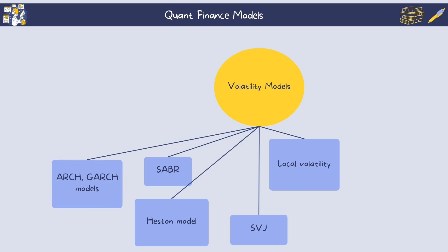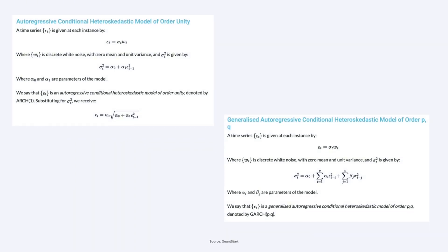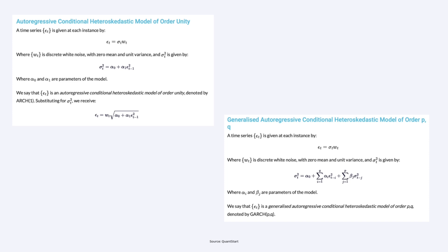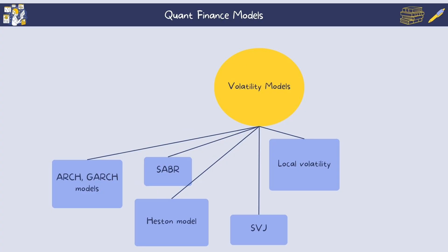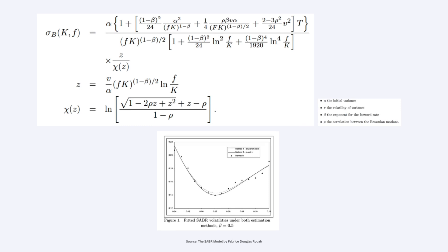Within volatility models, ARCH (Auto Regressive Conditional Heteroskedasticity) and GARCH (Generalized ARCH) are used to model time-varying volatility in financial time series. They capture volatility clustering by allowing current variance to depend on past squared returns and past variances, and are heavily used within option pricing and derivatives pricing. The SABR (Stochastic Alpha Beta Rho) model is a stochastic volatility model that captures the volatility smile in derivatives markets, particularly for interest rate derivatives.